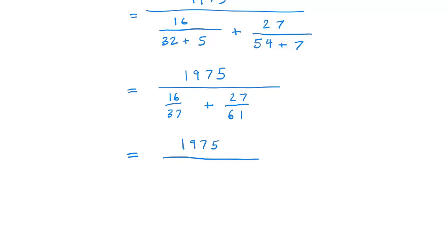The fractions in the denominator don't have a nice way of combining them in terms of finding a common multiple of 37 and 61. Those are both prime numbers.